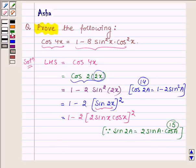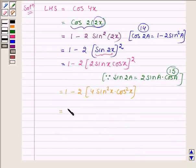So in further simplifying it, we have 1 minus 2 times 4 sin square x cos square x.